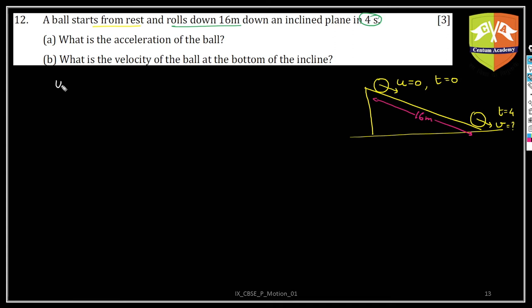U is equal to 0. T is equal to 4 seconds. And S is given as 16 meters. So all the information is given. You have to find out final velocity or what is the acceleration of the ball. So acceleration can be found out by second equation of motion.